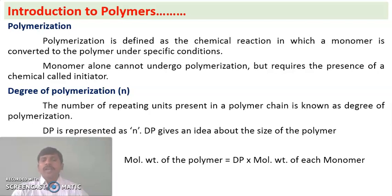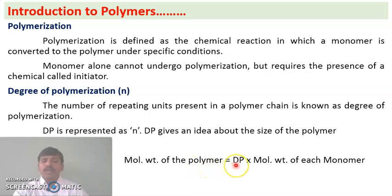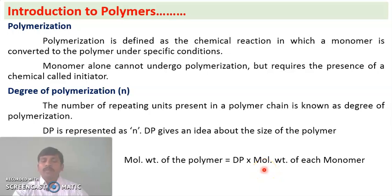DP gives an idea about the size of the polymer. If the DP is low, the size of the polymer is small or moderate; if the DP is high, the polymer is huge. The formula is: molecular weight of a polymer = DP × molecular weight of each monomer. Using this formula, we can calculate the molecular weight of a polymer or the DP if either value is known.